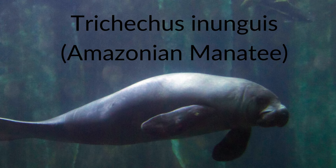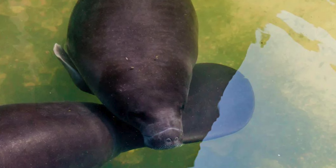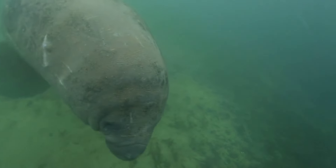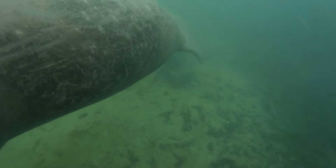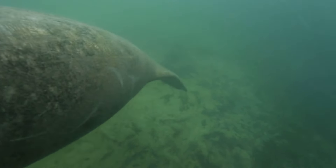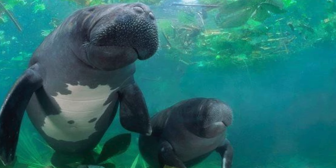Trichechus inunguis, or the Amazonian manatee, can be found in the Amazonian River Basin, ranging in Ecuador, Venezuela, Brazil, Peru, and parts of Bolivia and Colombia. This species can weigh up to 379 kilograms, or 836 pounds, with a maximum length of 266 centimetres, or 8 feet 8.7 inches. The Amazonian manatee has a pretty wide-ranging diet, including water hyacinths, bladderworts, hornworts, and water lilies. This species relies on changes in the peripheral circulation for the primary mechanisms in thermoregulation, and it also relies on fresh water, as there aren't any populations living in saltwater.